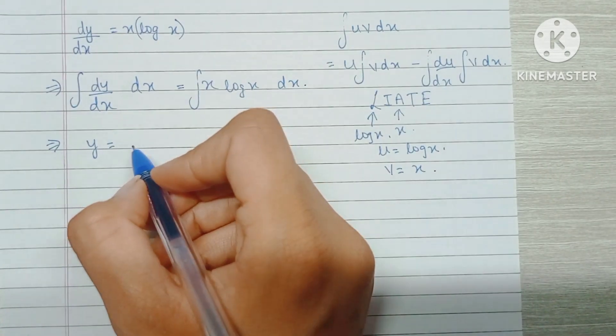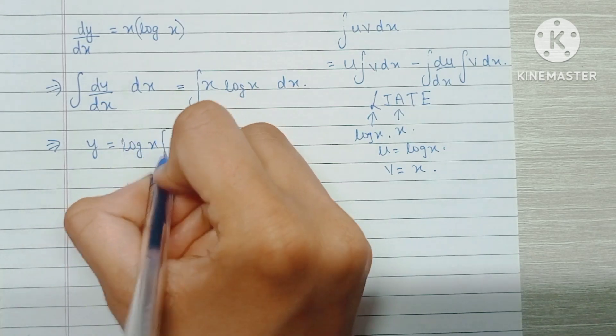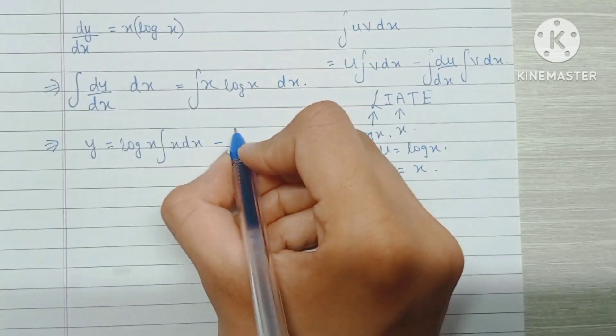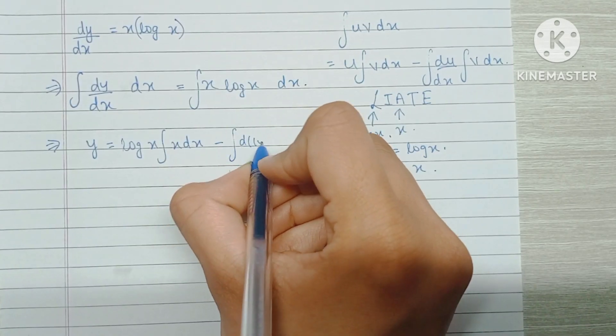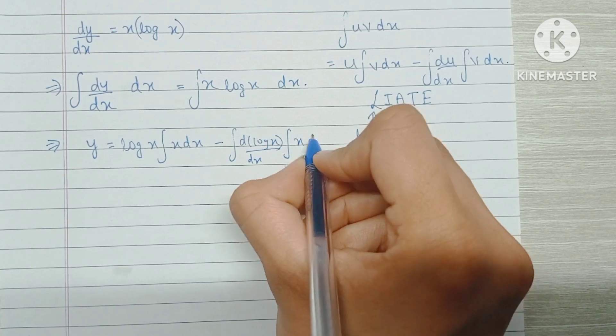So we have u times the integration of v: log x times the integration of x dx minus the integration of the differentiation of log x times the integration of x dx.